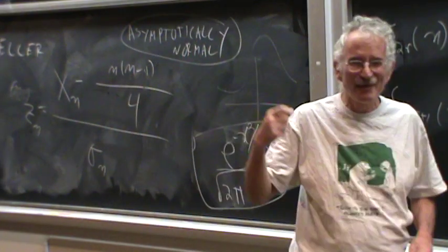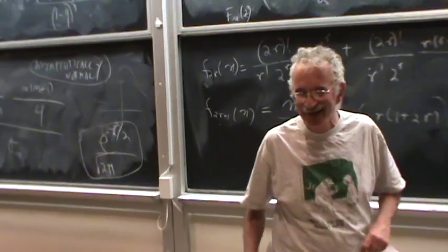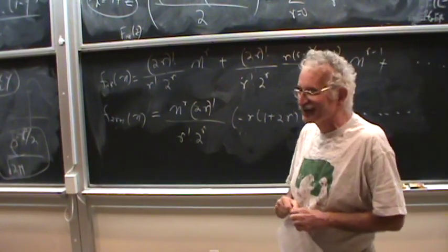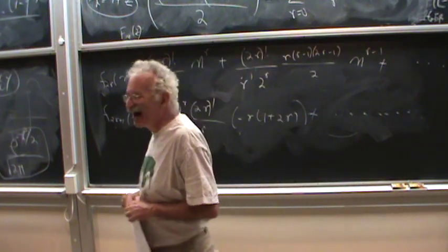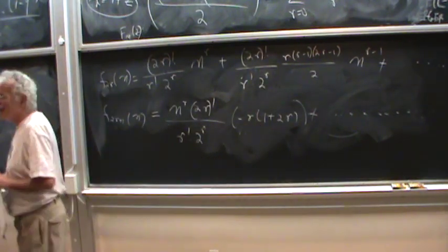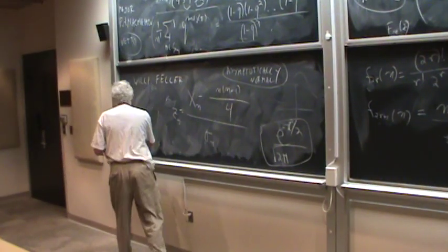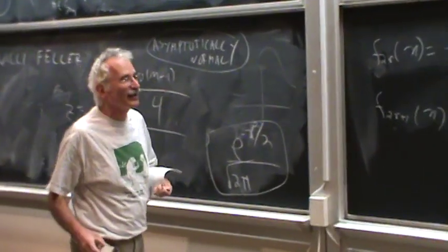So we knew that separately, the major index and the number of inversions are asymptotically normal. But what about the interaction? The first thing you want to ask about the interaction was to find the correlation.